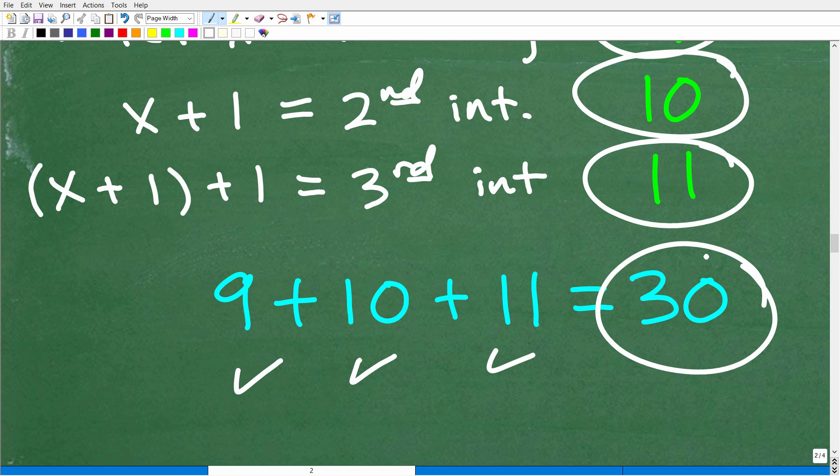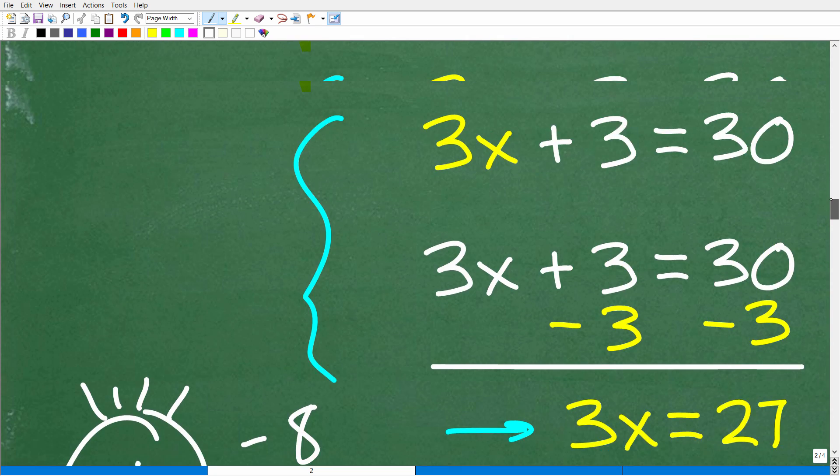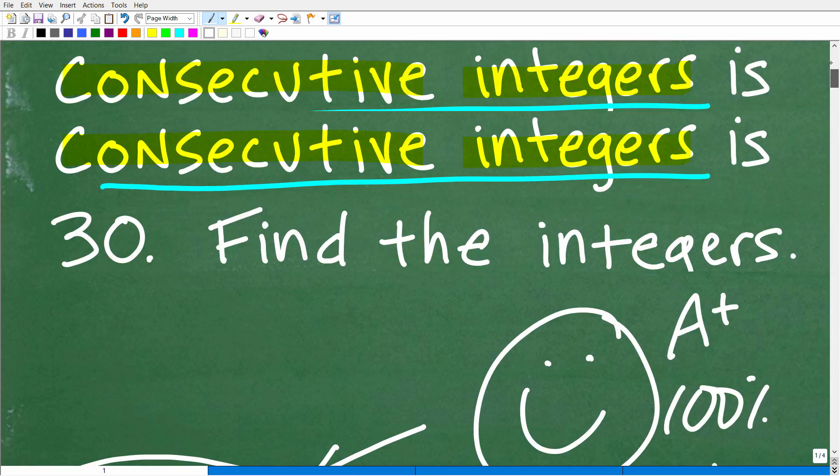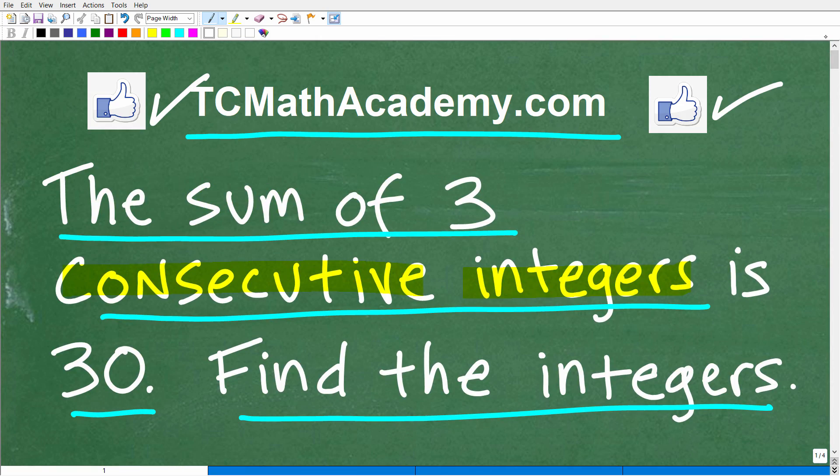So, again, this type of algebra problem is what I call an oldie but goodie. Okay, for those of you that like music in the 1950s and 60s, I like that music. We call those oldies, right? Or kind of classic type of music. But this type of problem has been around for decades and decades and decades. I'm telling you, every single person taking an algebra course will face a problem like this. But hopefully, okay, even if you're not taking algebra, you'll learn something.